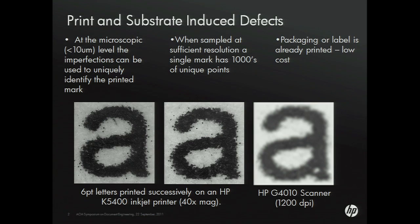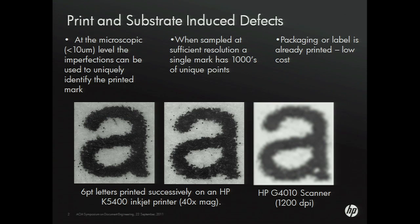People may be familiar with printer forensics, where if you get some document you want to know which printer it was printed on. But what we're looking at is print forensics, where we want to identify individual printed items. Every single thing you print, if you look at it in enough detail, it has its own unique fingerprint, and we can really robustly identify each and every printed item.